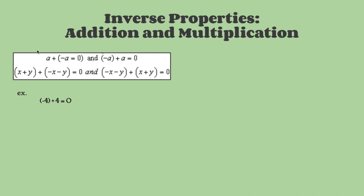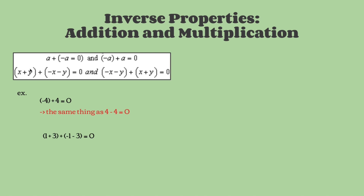Let's go over some examples. Here we substituted 4 for a in the first equation. So instead of negative a plus a equals 0, we have negative 4 plus 4 equals 0. This checks out because negative 4 plus 4 is basically 4 minus 4. Let's take it one step up — let's substitute x as 1 and y as 3. So our equation is 1 plus 3 plus negative 1 minus 3 equals 0.